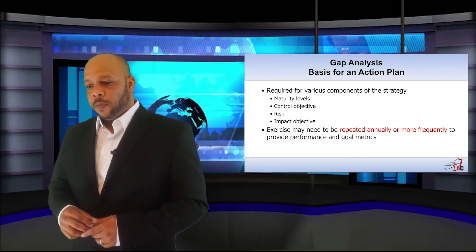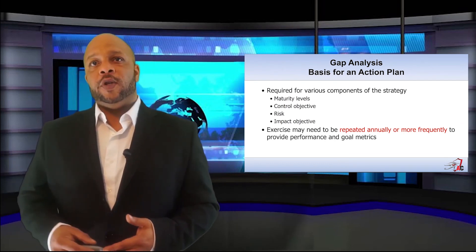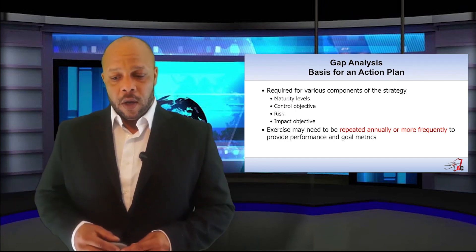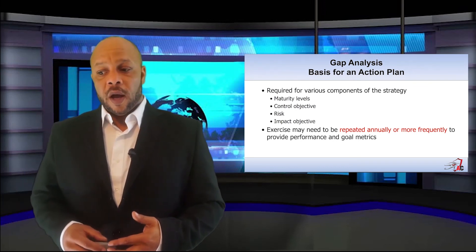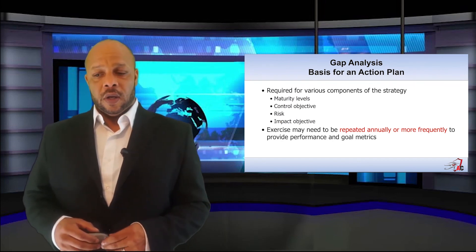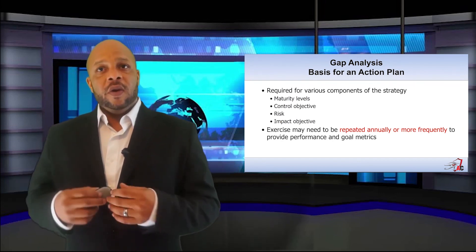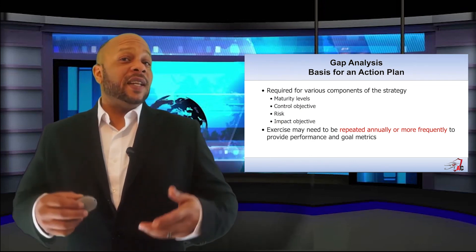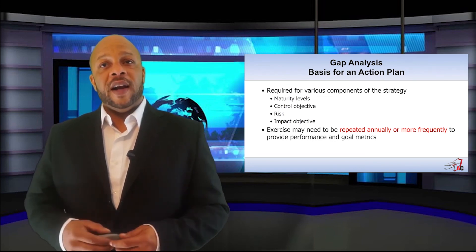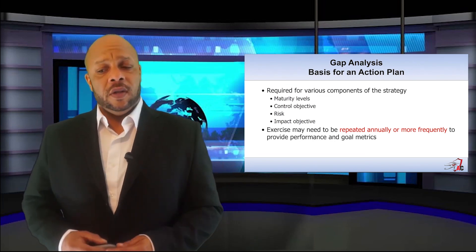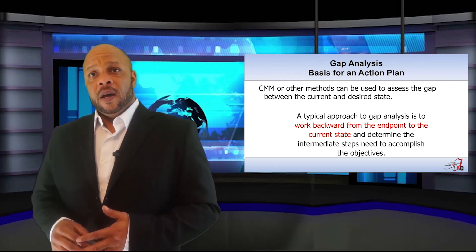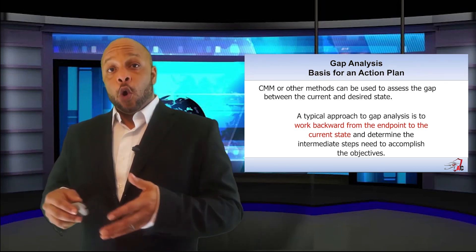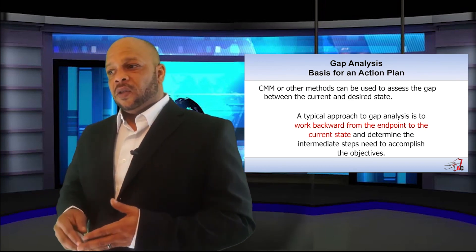These action plans are what help us develop our total gap analysis. It shows us individual maturity levels either as an organization or department by department — what departments are posing the highest risk, what departments pose the least risk, and what departments have the highest impact on total operations. You need to repeat these assessments at least annually, and more frequently in the beginning, to ensure you are providing the performance and goal metrics that senior leaders need to make the right decisions. A typical approach to gap analysis is to work backwards from the endpoint to the current state, letting us know where we are and showing us the roadmap of where we need to go.